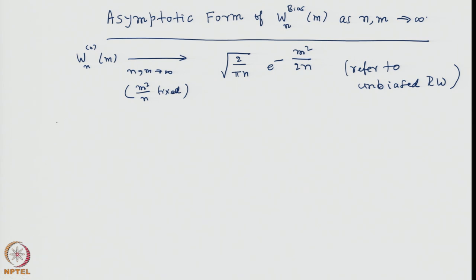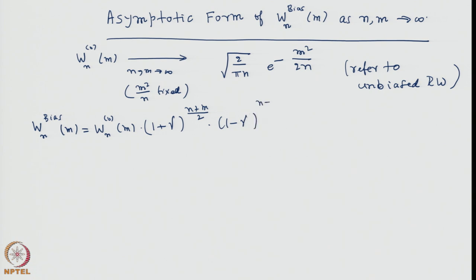The present expression W_n biased (m) equals W_n unbiased (m) times (1 plus gamma) to the power (n plus m)/2 times (1 minus gamma) to the power (n minus m)/2, and takes the following form. We note that any function a to the power x equals e to the power x log a, so we can always write it this way.